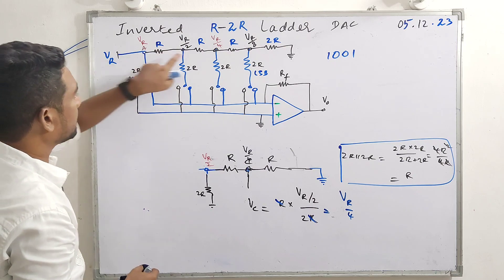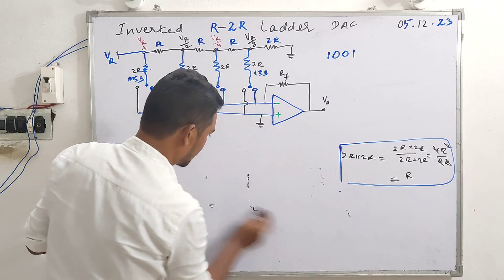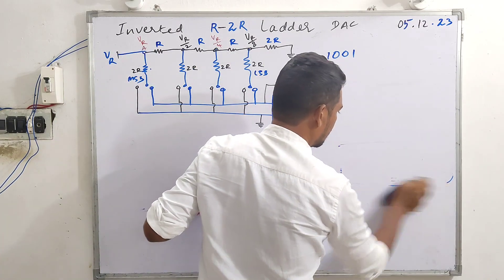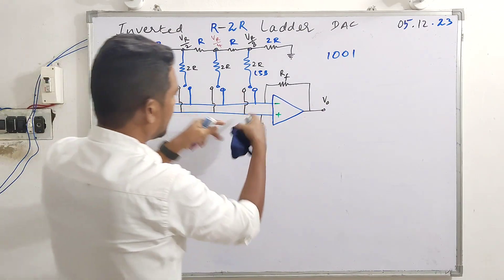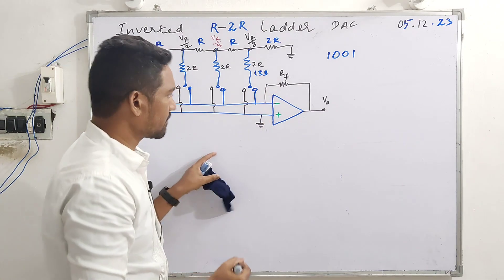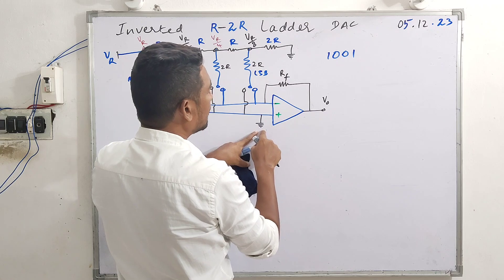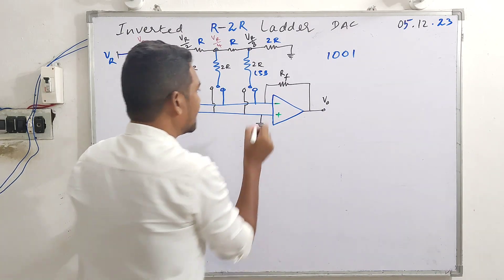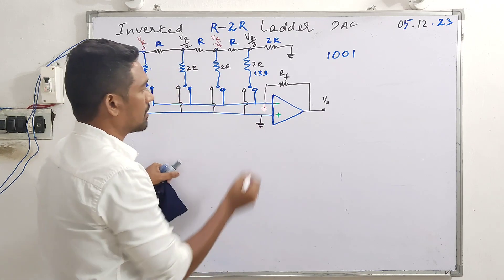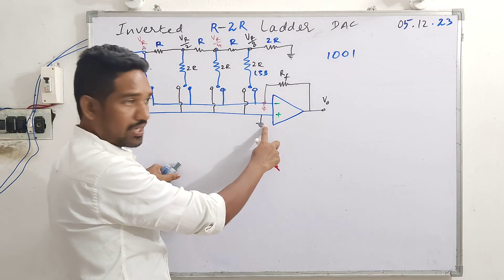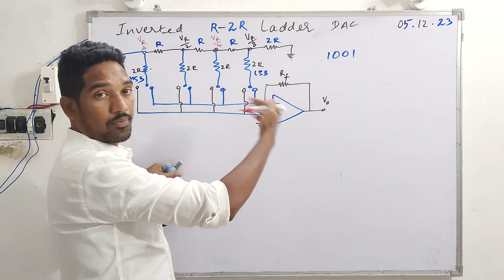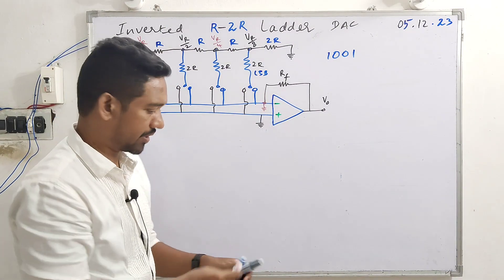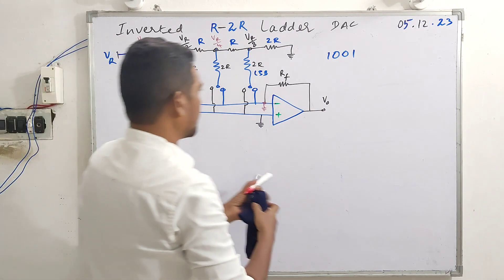This resistor ladder network is placed in the circuit. The input reference voltage is given to the inverting terminal, and the non-inverting terminal is grounded. Because of this, virtual ground appears at the inverting node — physically grounded due to the high input impedance and properties of the operational amplifier. This virtual ground is a game changer.